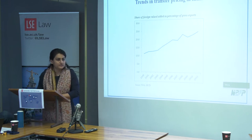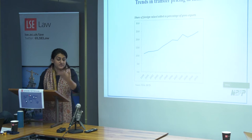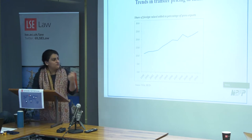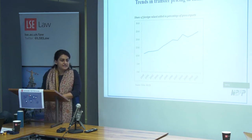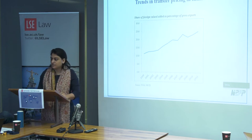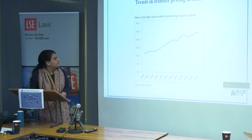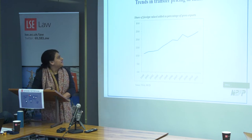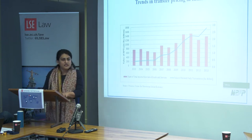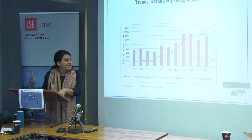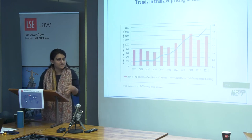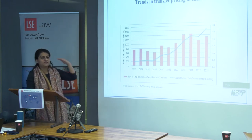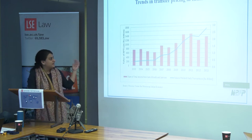To give an economic context of why transfer pricing is important: one signal of global integration has been the share of foreign value added in gross exports. If a product is made in India, how much of it was actually produced abroad? That share went up from 10% in the early 2000s to about 25% in 2011, which means there are intercompany transactions. Indian companies also must mandatorily report related party transactions, and taking just sales between holding and subsidiary companies, about 3% of all sales are intercompany.